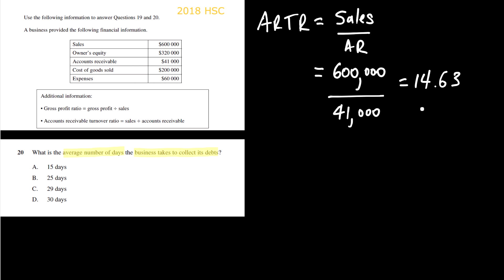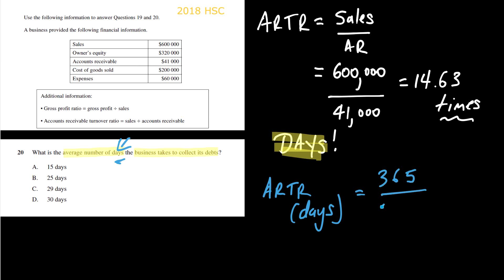So sales is 600,000 divided by accounts receivable, which here is 41,000. So this gives us a value of 14.63. And it's worth thinking about, what is the units here? So this is 14.63 times, but it's not really that useful in terms of our comparison, because if you look at the language of the question, the key thing is they want this in days. And we can see here that if we look at the question itself, it's the average number of days is right there. So what I need to do is think about, so if I'm thinking about accounts receivable turnover ratio in terms of days, what I'm going to do is put 365 days in the year over the accounts receivable turnover ratio.